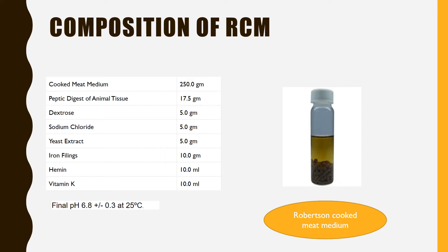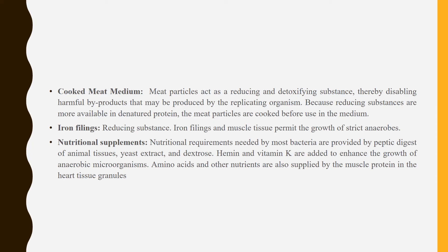The composition of RCM contains cooked meat medium, peptic digest of animal tissue, dextrose, sodium chloride, yeast extract, iron filings, haemin, and vitamin K. In cooked meat medium, meat particles act as reducing and detoxifying substances, thereby disabling harmful by-products that may be produced by replicating microorganisms. Because reducing substances are more available in denatured protein, the meat particles are cooked before using the medium. Iron filings are a reducing substance that permit the growth of strict anaerobes.